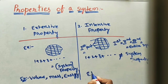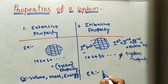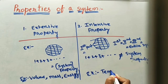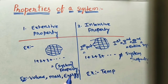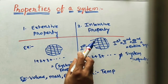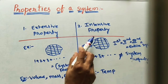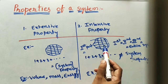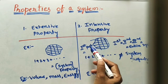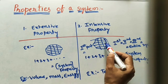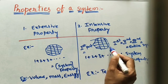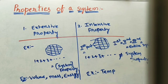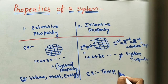For intensive property examples, we can take temperature. If I am keeping the thermometer at the first part and then measuring the temperature of the entire system, it will give the same value. Temperature, pressure, and density — we can take these as examples of intensive property.